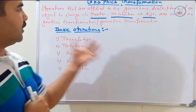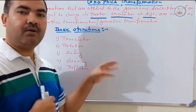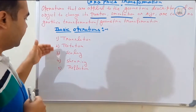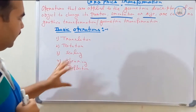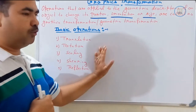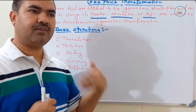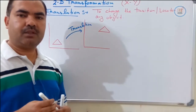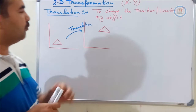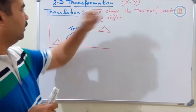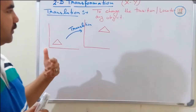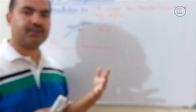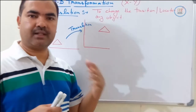The basic operations we can apply on any object are: translation, rotation, scaling, shearing, and reflection. These are the basic operations applicable to both two-dimensional and three-dimensional objects. In this session we are going to discuss two-dimensional transformation, applying operations on the x-y plane. The basic operation we discuss today is translation, which is the simplest operation inside geometric transformation.